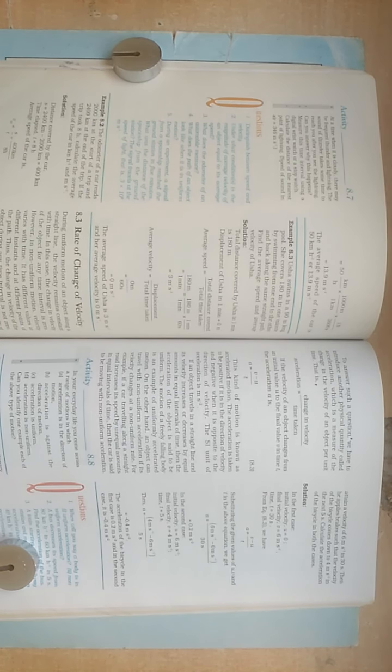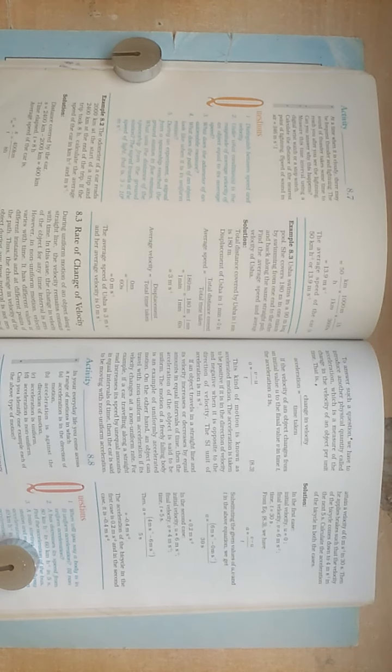This kind of motion is known as accelerated motion. The acceleration is taken to be positive if it is in the direction of velocity and negative when it is opposite to the direction of velocity.